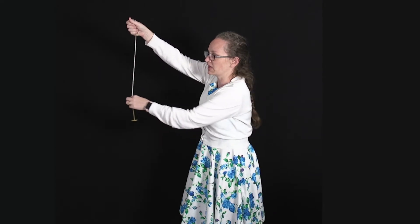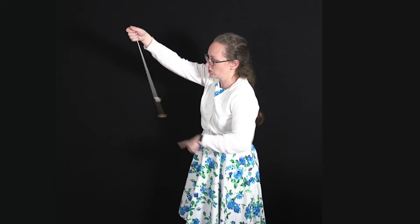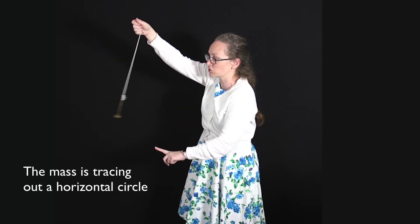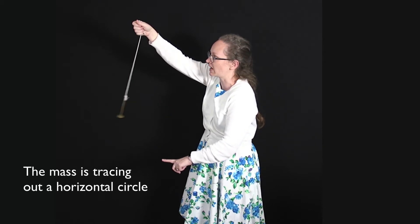So a conical pendulum is a pendulum that goes around in a circle like this. So the mass, the bob itself, is tracing out a circular path and it's got a few forces acting upon it.